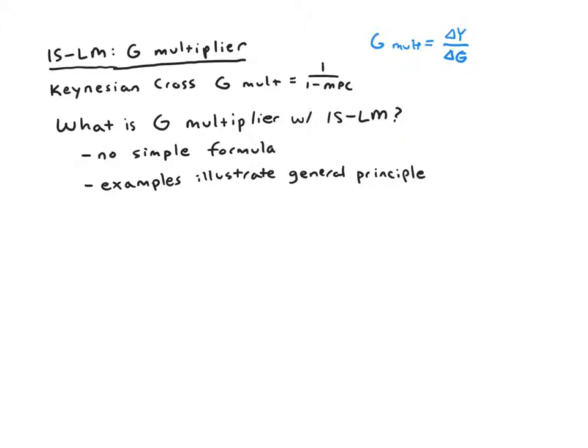And we found a simple formula for that G multiplier, it was 1 over 1 minus MPC. So in particular, if the MPC was really high, like 0.9, then this formula would tell us the G multiplier was 1 over 1 minus 0.9, which would give us 10.